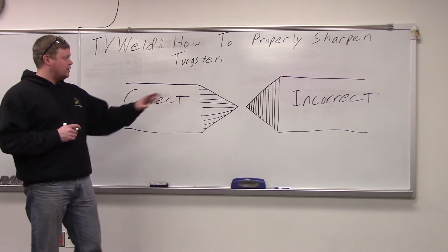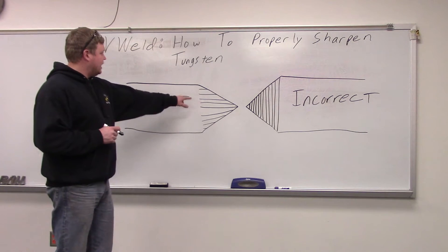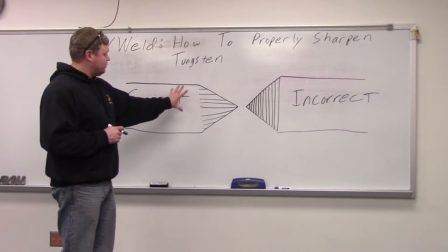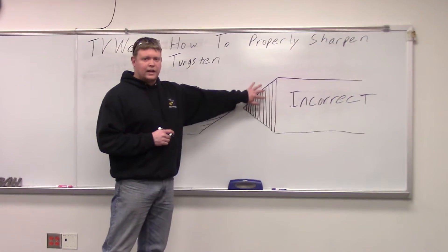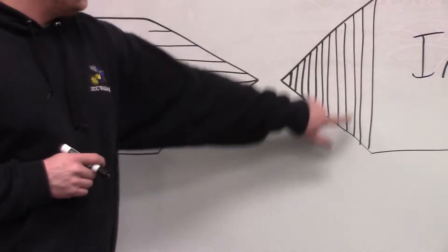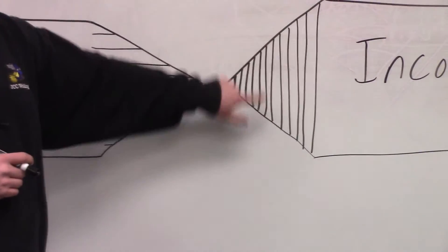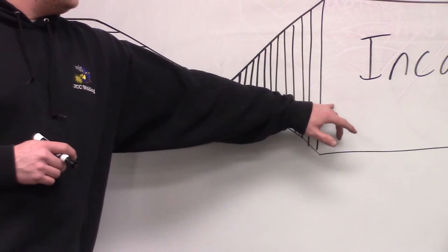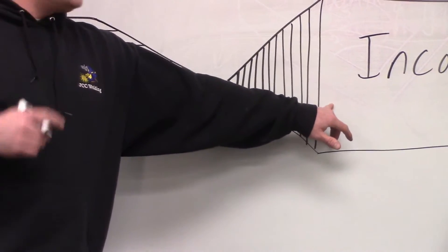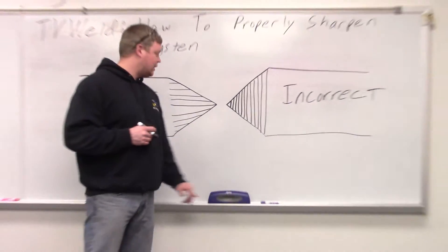I got the correct way here and the incorrect way. These little lines, this is just a blown-up view of what tungsten would look like. These lines indicate grinding marks. You can see these ones are going perpendicular to the tungsten. These ones are going parallel. This is incorrect and we're going to go out and fire up a grinder and show you how to do the incorrect way as well as the correct way.